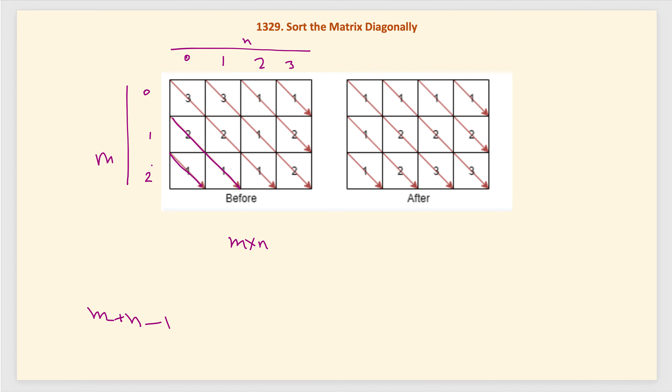We will have that many diagonals. What we can do is process them starting from the first column — zeroth column — going till the end, then starting zeroth column going further, and then similarly for the zeroth row. We will sort each diagonal by taking all elements of a diagonal into a priority queue, which will automatically sort the elements in increasing order using a min heap, and then backfill those elements.